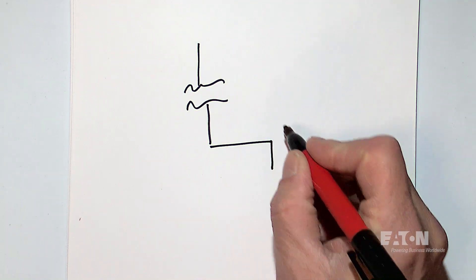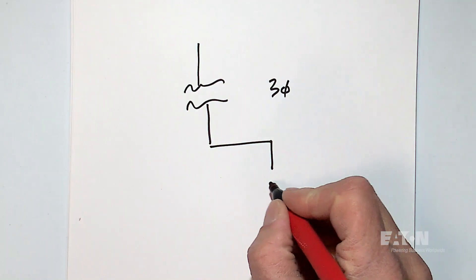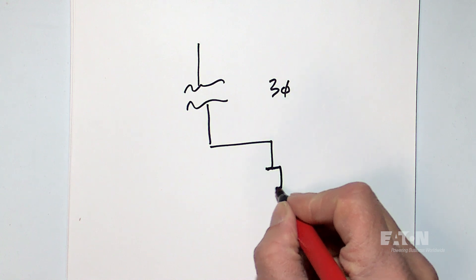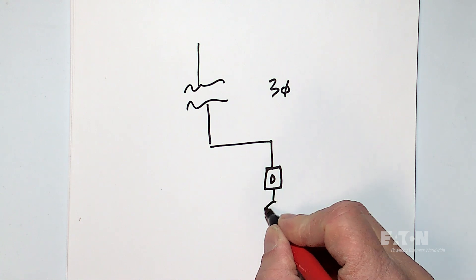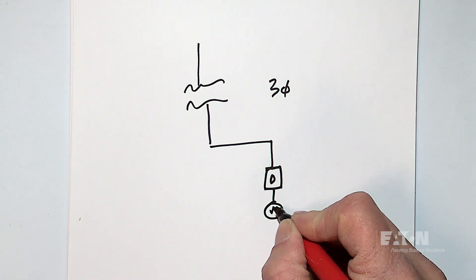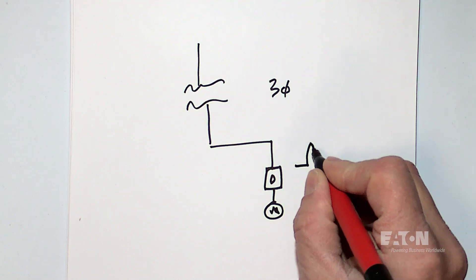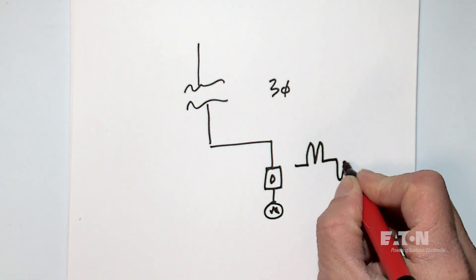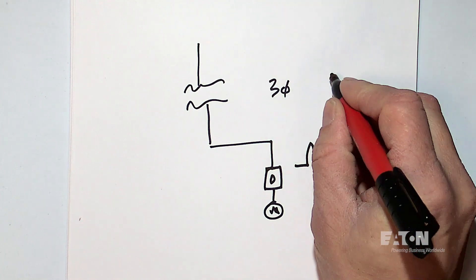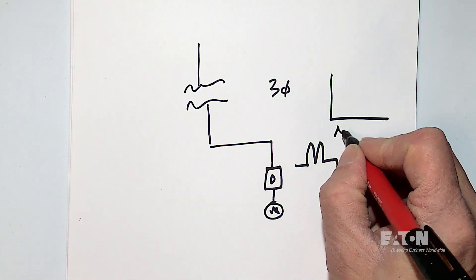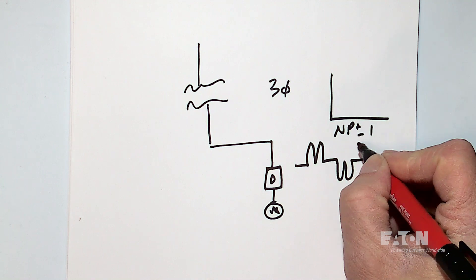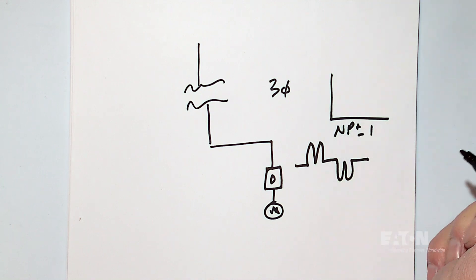So on a three phase system, if I have a drive and I have a motor, my harmonics current is going to look something like this. Again, very characteristic. I'm going to have a spectrum that looks like NP plus or minus one, where P is the number of pulses, N is just an integer—one, two, three, four, five—plus or minus one.